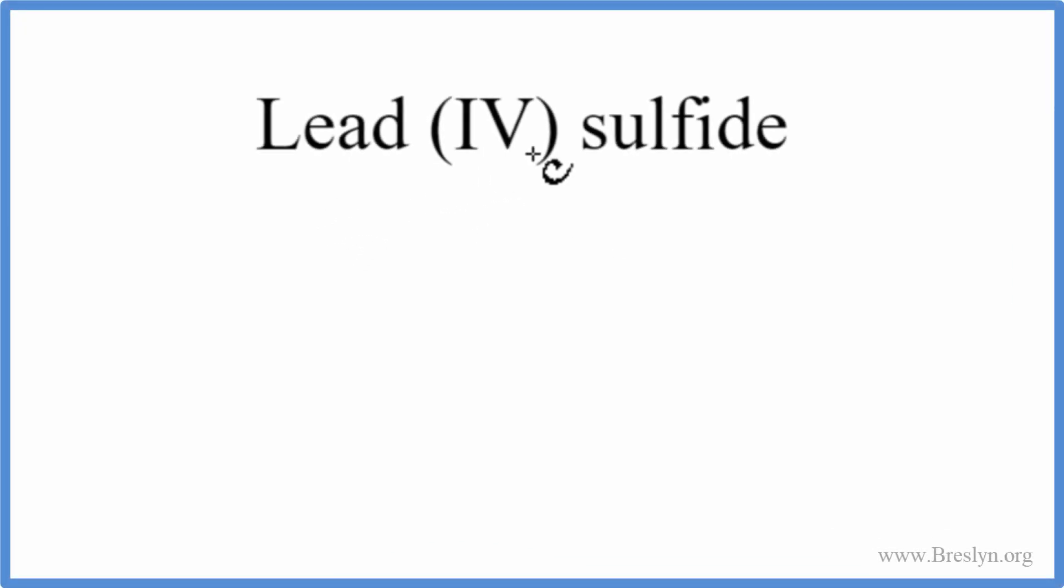To write the formula for lead-4-sulfide, we go to the periodic table and we look up lead, which is Pb, and then we look up sulfide. We're looking for sulfur, that's S.